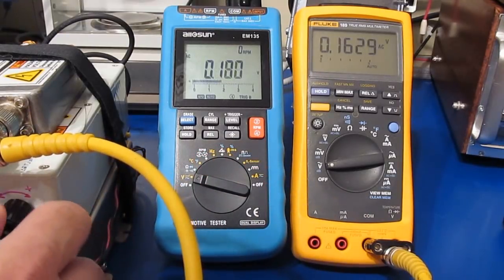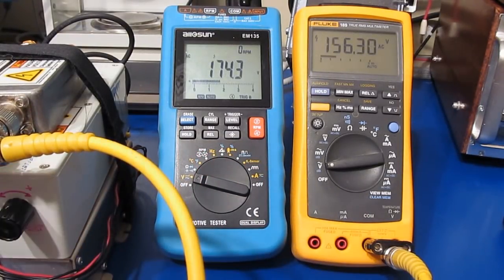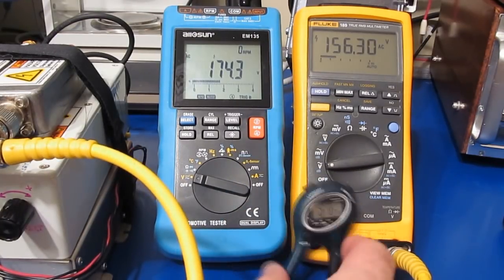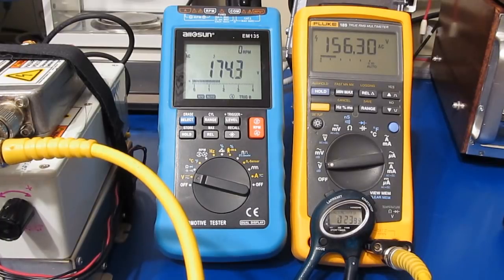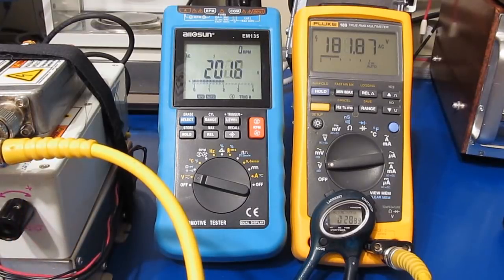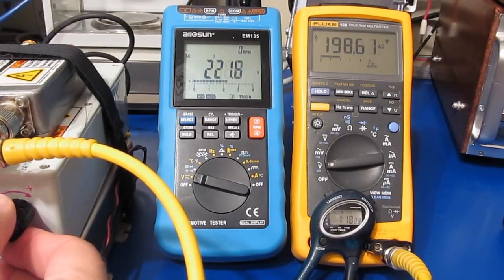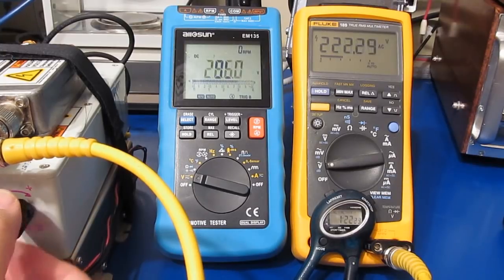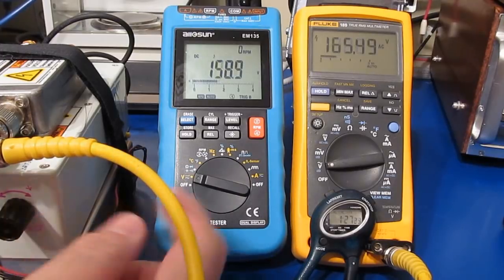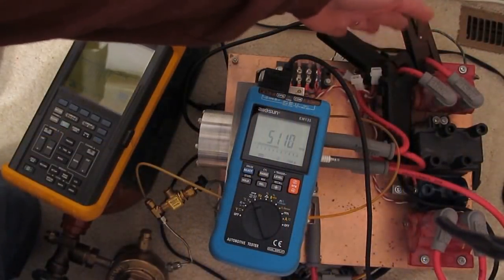Testing at lower voltages to find the threshold shows the meter switches from AC to DC mode at just over 240 volts.